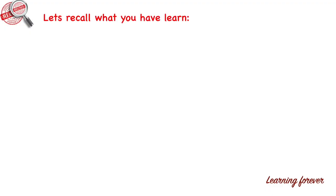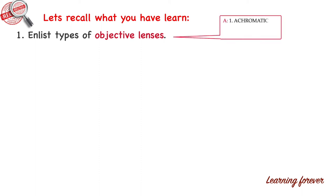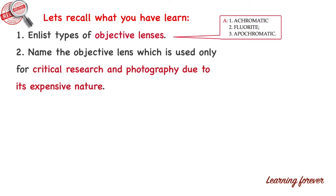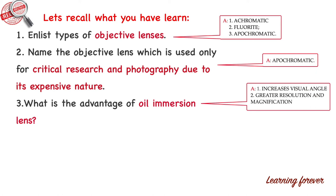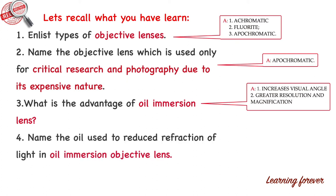Let's recall what we have learned. Question 1: Enlist types of objective lenses. Answer: Achromatic, fluorite, and apochromatic. Question 2: Name the objective lens used only for critical research and photography due to its expensive nature. Answer: Apochromatic lens — since it is expensive, it is not affordable for routine microscopy. Question 3: What is the advantage of oil immersion lens? Answer: Due to cedar wood oil, there is an increase in visual angle and greater resolution and magnification. Question 4: Name the oil used to reduce refraction of light in oil immersion objective. Answer: Cedar wood oil.